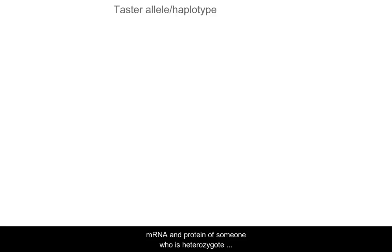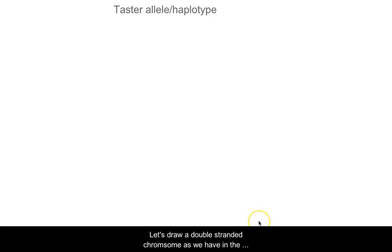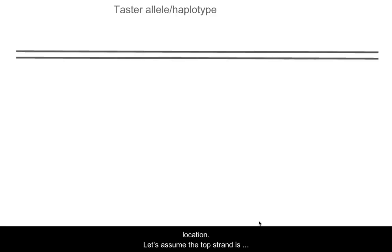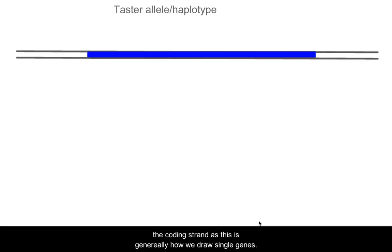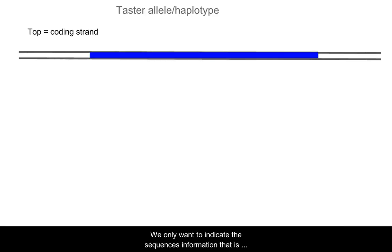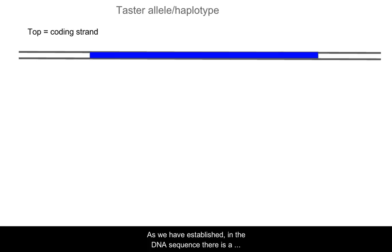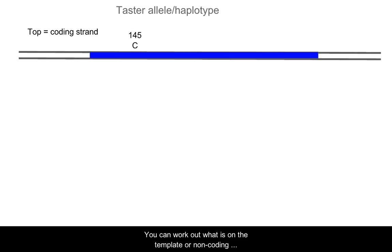For question 5, you will draw how this information looks in the DNA, messenger RNA, and protein of someone who is heterozygous for PAV and AVI. I'll get you started with the taster allele haplotype. Let's draw a double-stranded chromosome as we have in the past, then add in the gene location. Let's assume the top strand is the coding strand, as this is generally how we draw a single gene. We only want to indicate the sequence information that is different between our two alleles. As we have established, in the DNA sequence there is a difference at position 145, so let's label this position.